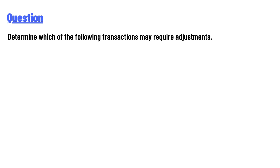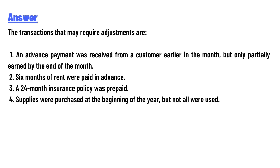The transactions that may require adjustment are: first, an advance payment was received from a customer earlier in the month but only partially earned by the end of the month; second, six months of rent were paid in advance; third, a 24-month insurance policy was prepaid; fourth, supplies were purchased at the beginning of the year but not all were used.